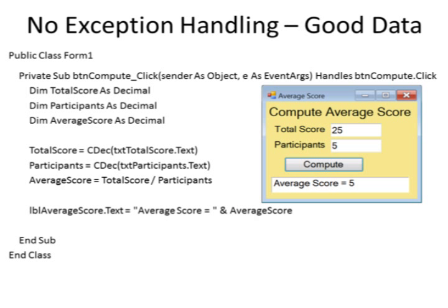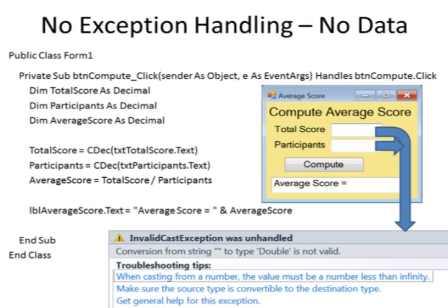The code for this example has no exception handling. Everything works fine as long as the data is good. But if the user clicks the compute button when there is no data in those text boxes or if the data is non-numeric, the routines are unable to convert the non-numeric data into a number. The program exits with an invalid cast exception was unhandled error and the program fails. Not very clean operation.